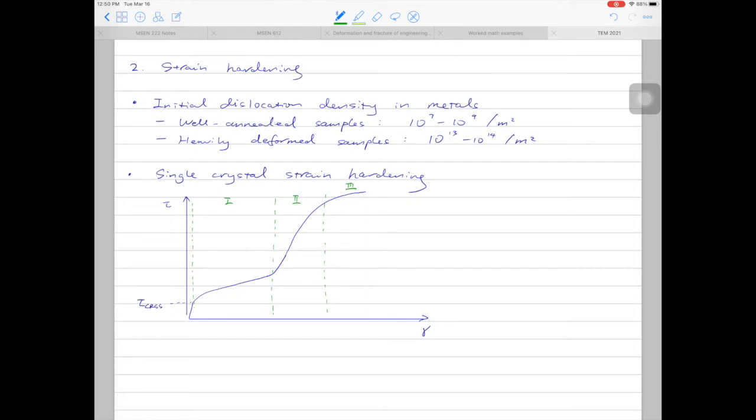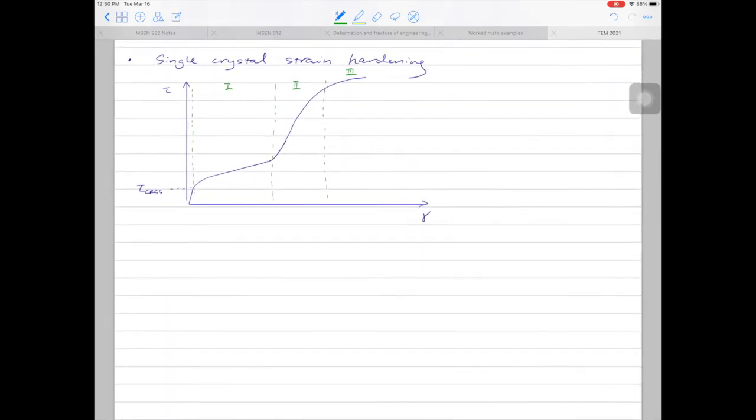The question is, what kind of dislocation behavior leads to these three distinct stages? For stage 1, as you can see, the strain hardening is fairly low. In this stage, dislocations can easily glide and multiply in the crystal without too much interaction. That's why we don't get too much strain hardening in this stage.